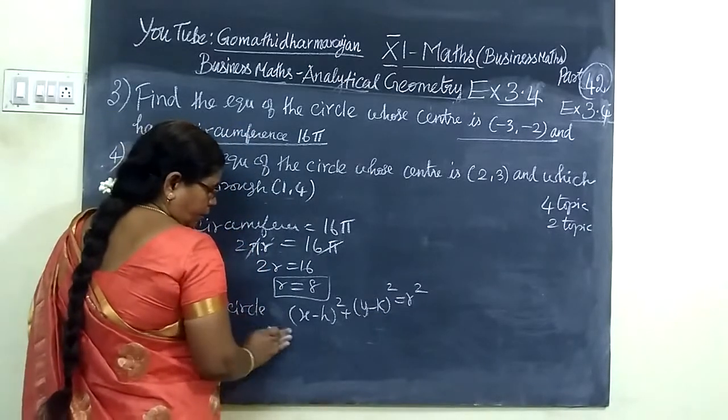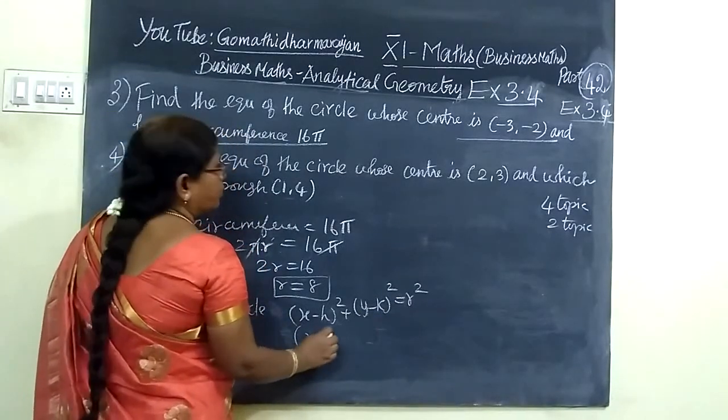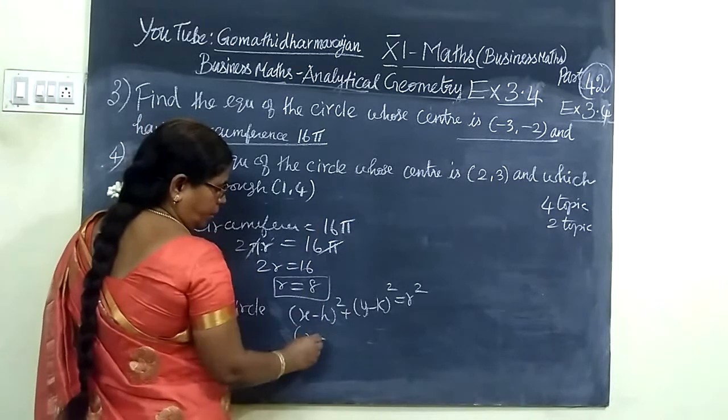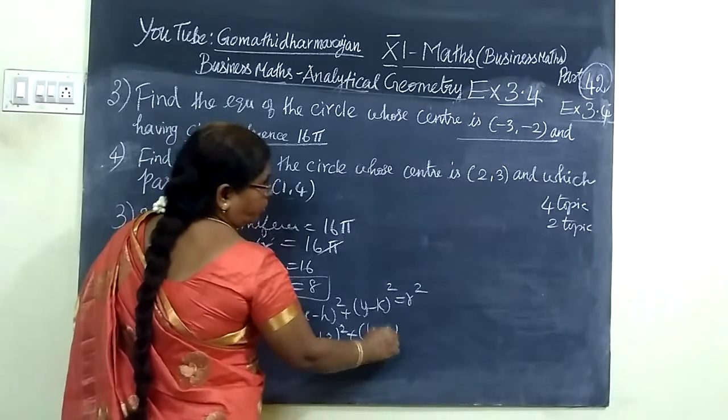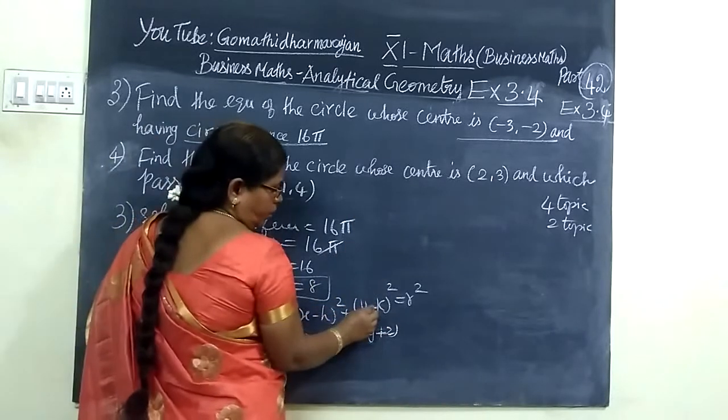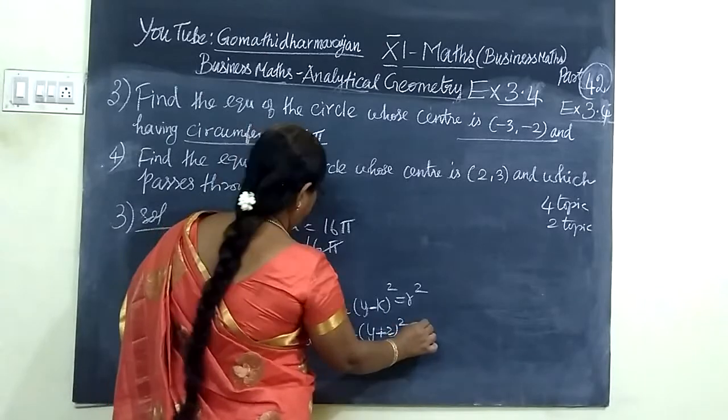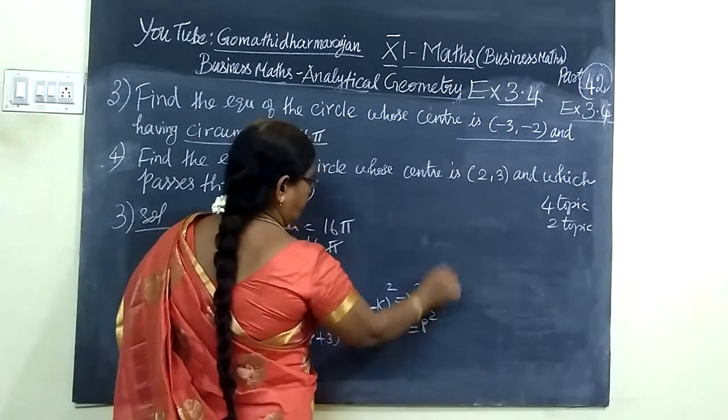So this equals x minus (-3) whole square plus y minus (-2) whole square equals 8 square. That is (x + 3)² + (y + 2)² = 64.